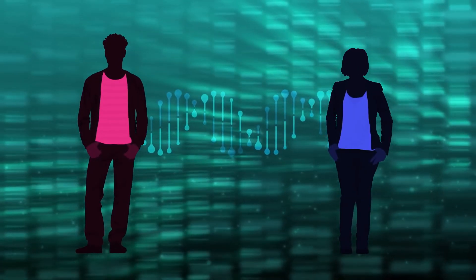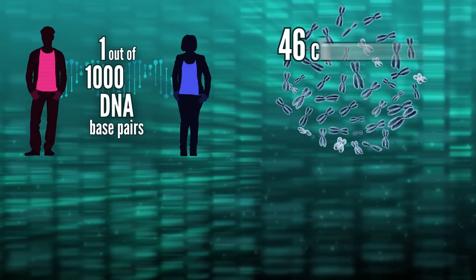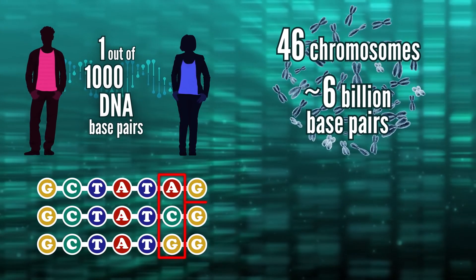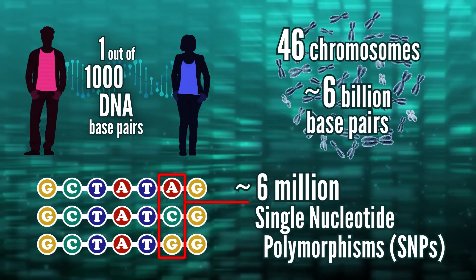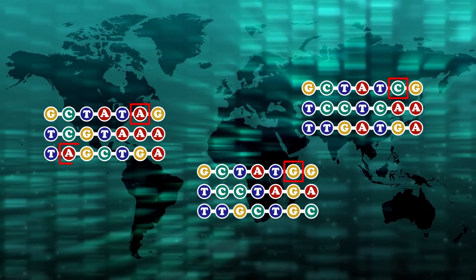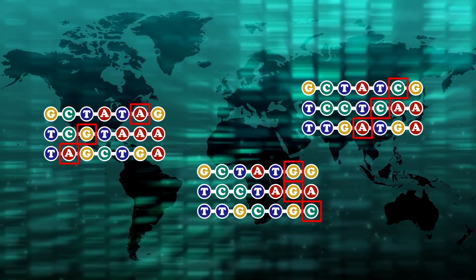Today, any two humans only differ by about 1 out of 1,000 DNA base pairs. But our genome is so big, that's still millions of single letter differences, or SNPs, for single nucleotide polymorphism. We tend to see combinations of these changes, chunks of SNPs, associated with different geographic locations.